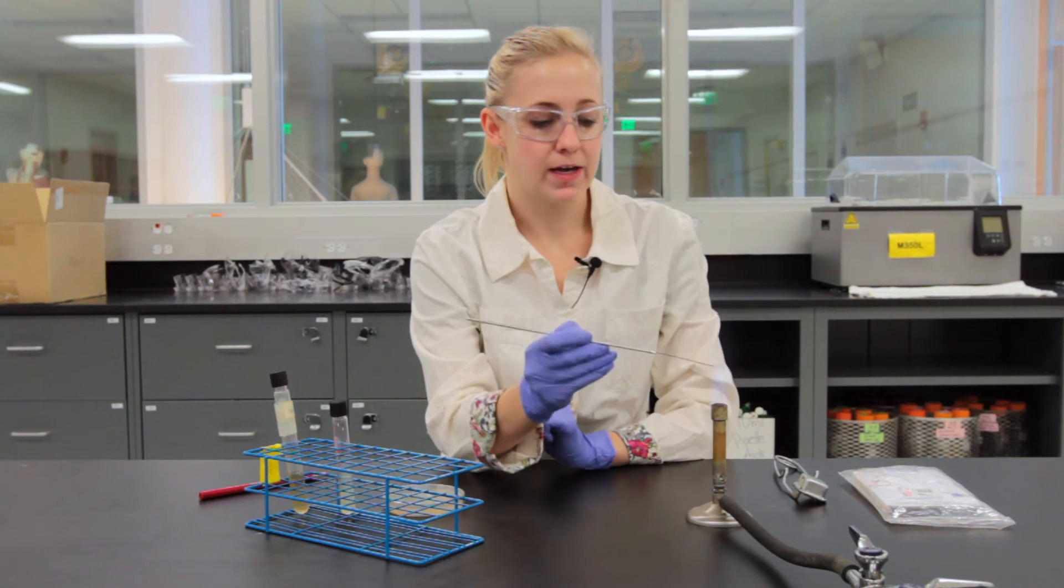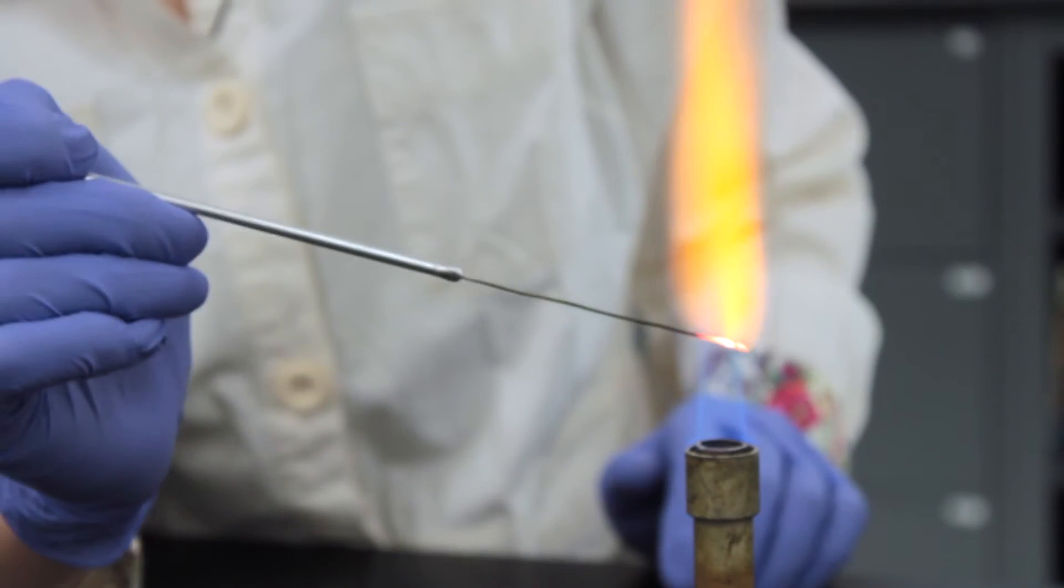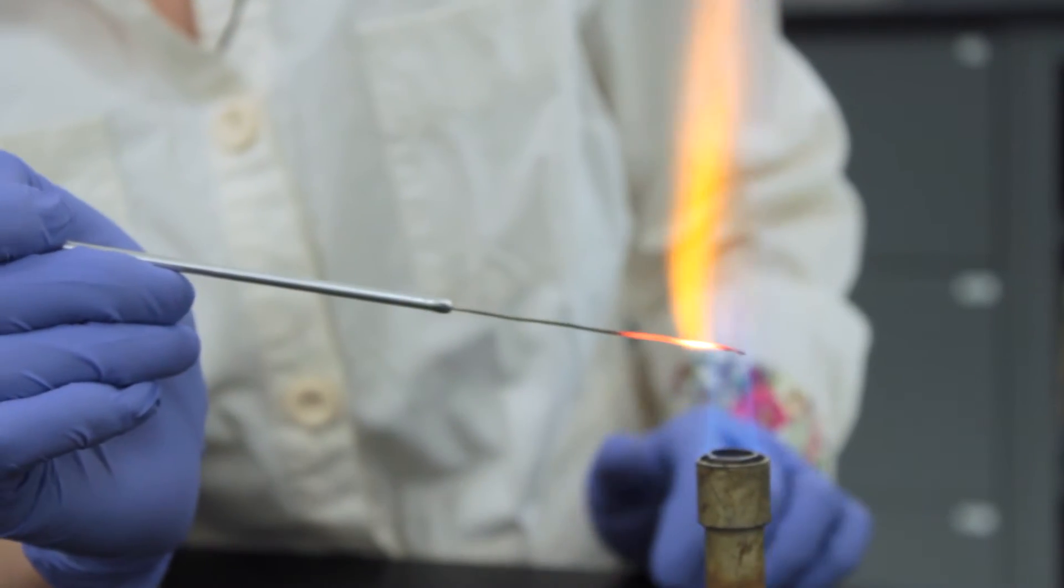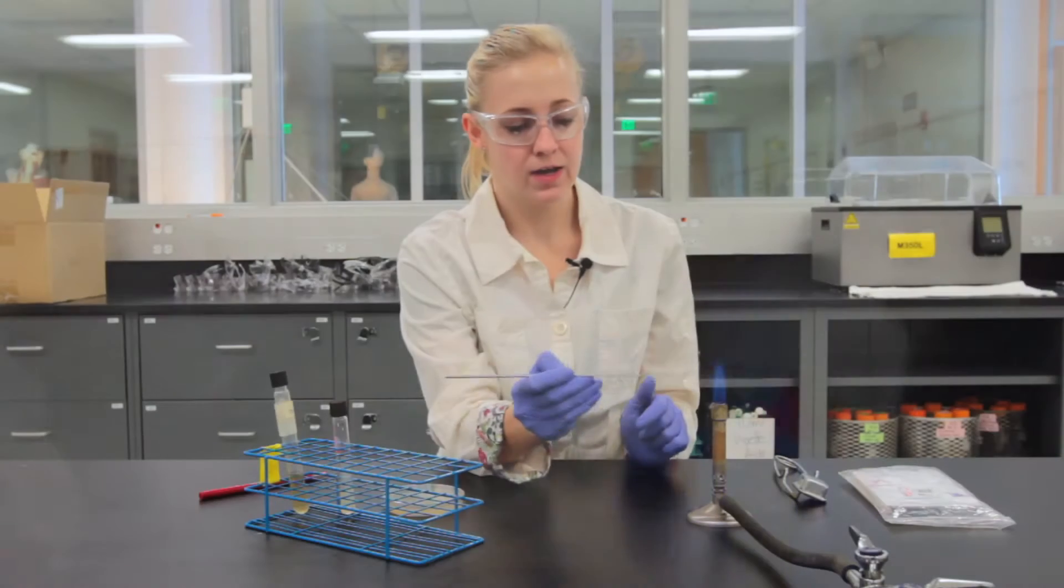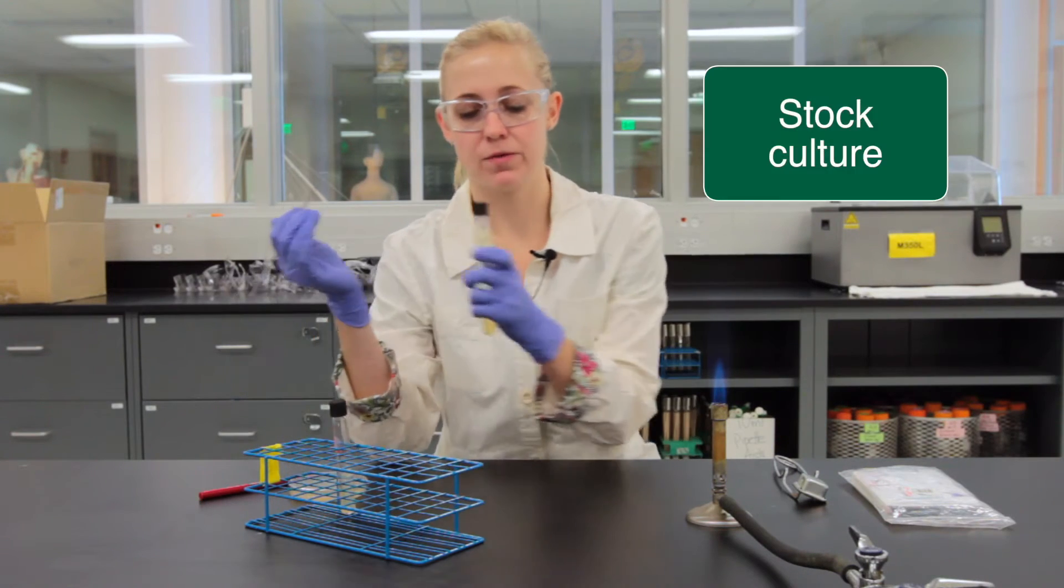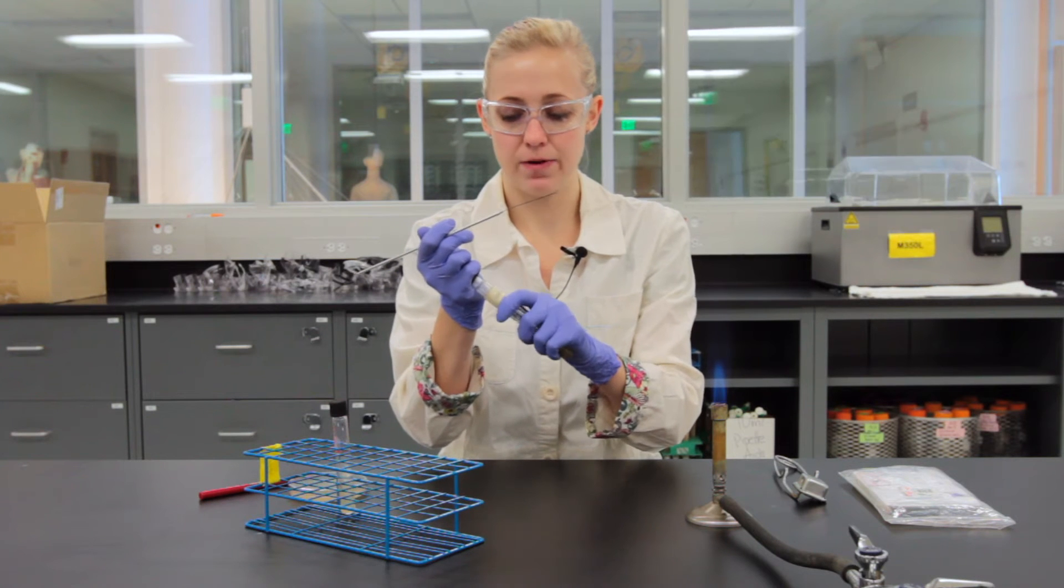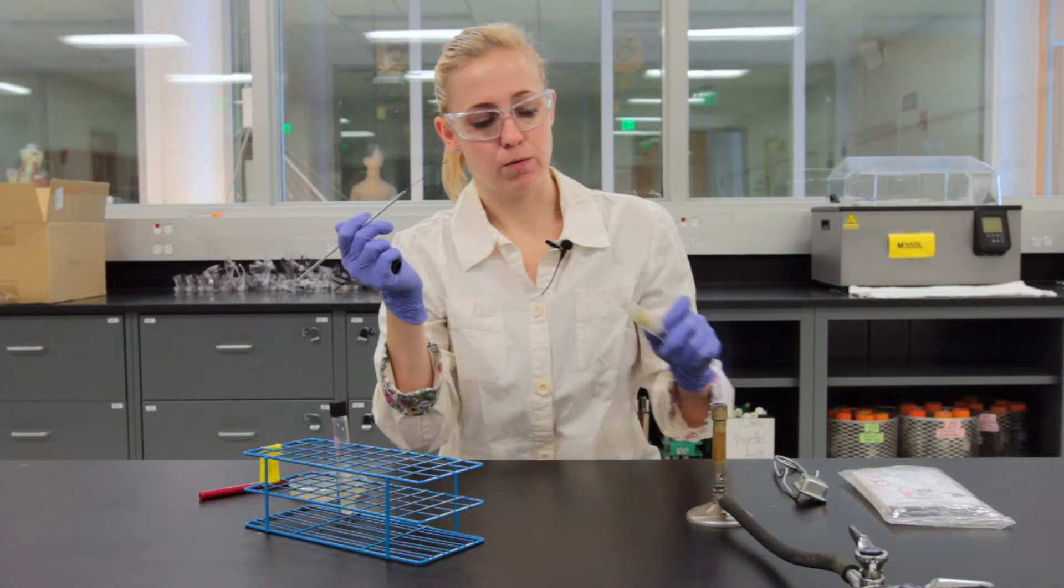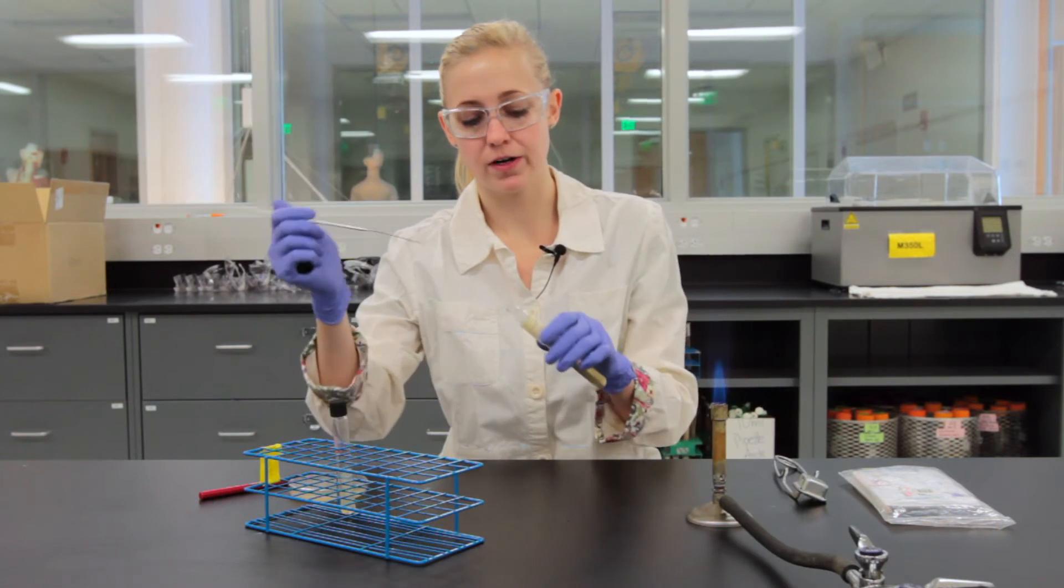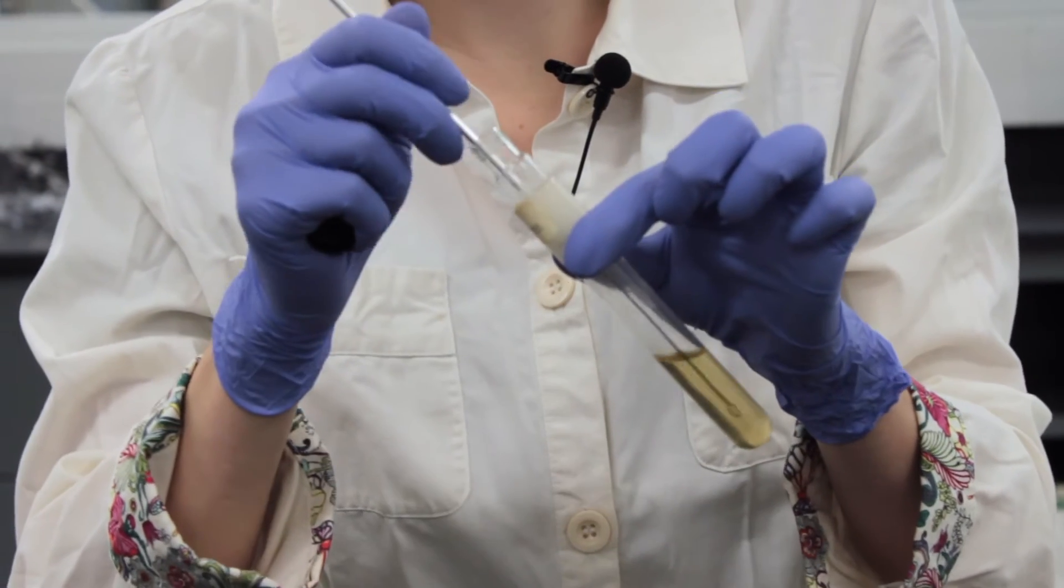I will flame my loop until it gets red hot. I also want to flame a little bit more when I'm sticking the loop down into the tube to make sure that I get rid of all that contamination that we don't want. Now that my loop is flamed I'll cool it off a little bit. I'm going to grab the stock culture with my left hand and slowly screw off the cap. In my left hand I will wave this culture over the flame to prevent any bacteria from falling in and I'll stick my cooled loop into the bacteria and wave it around.